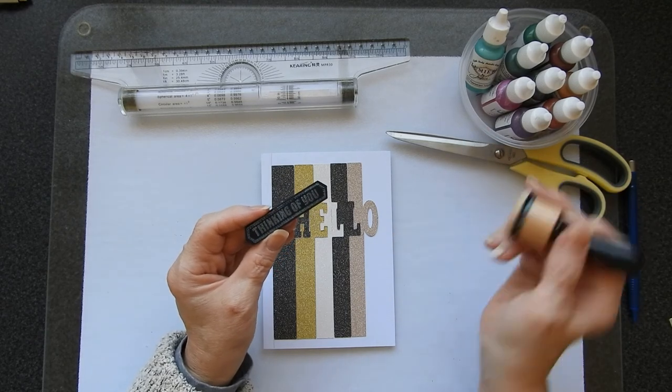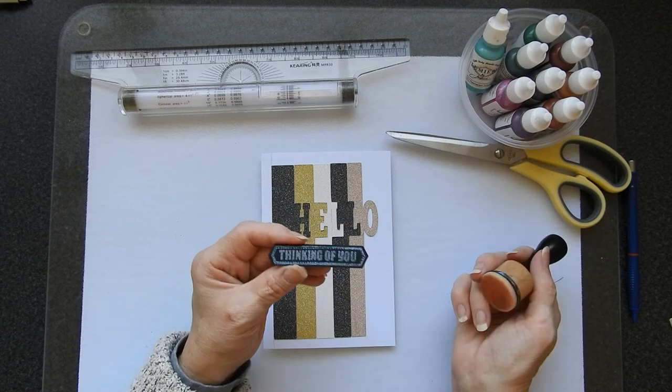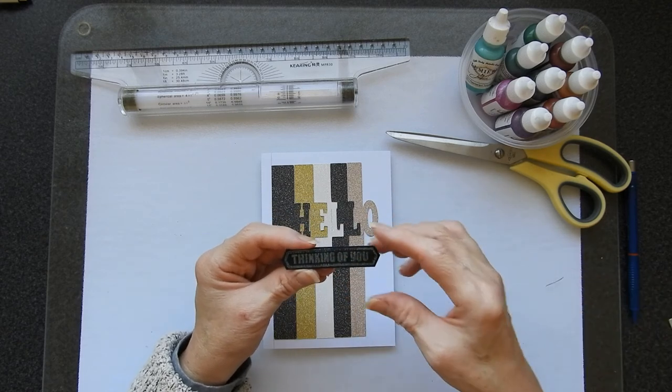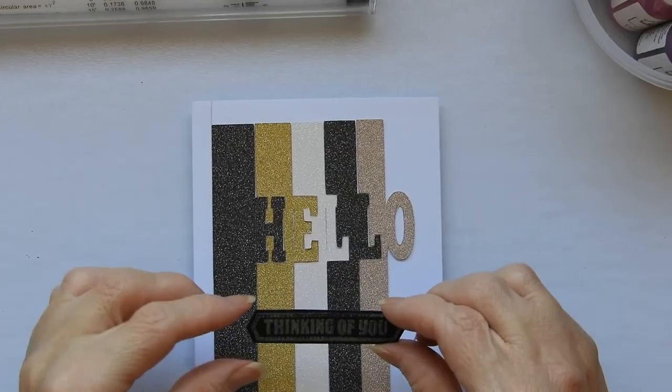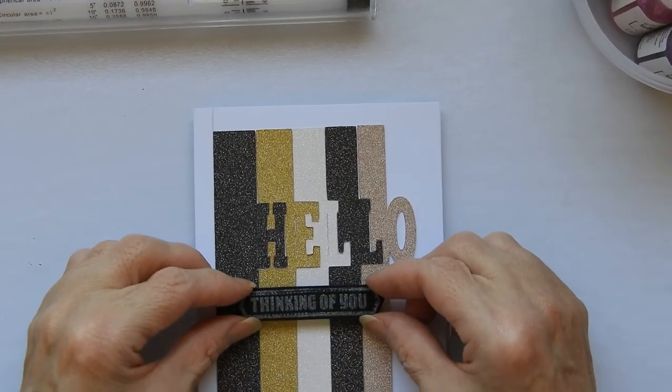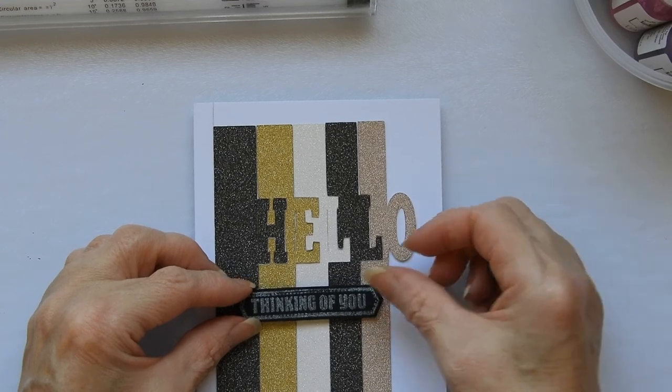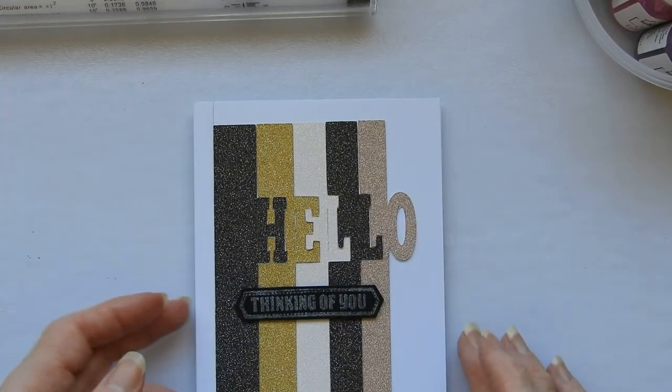picked it up and then just dabbed it over my stamp. And it works really nicely and it gives you this lovely metallic look. So I put my double-sided foam tape on the base there and just going to put that in place.